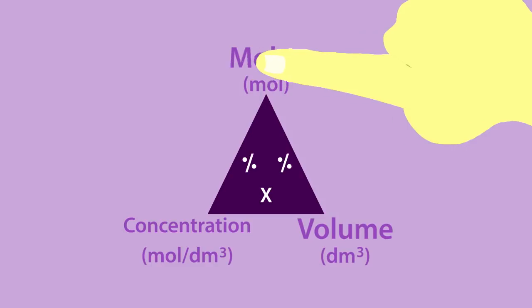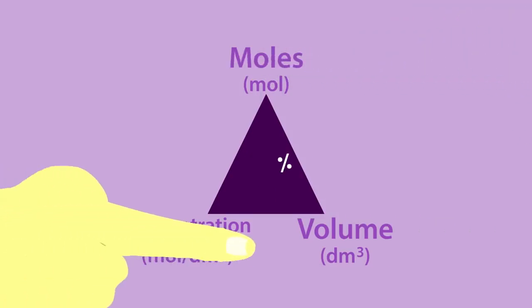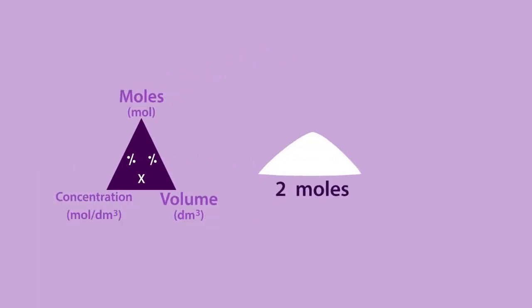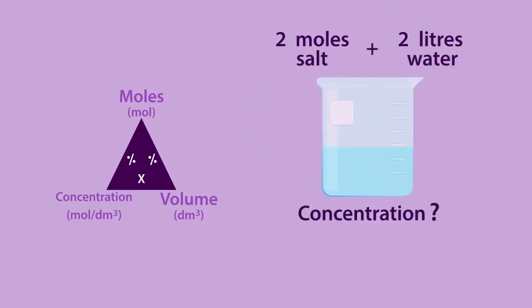If you want to find the concentration, you cover this and divide the number of moles by the volume. Let's try this now. If you have 2 moles of salt and dissolve it in 2 liters of water, use the formula triangle to calculate the concentration of the salt solution. Don't forget the units. Pause, write down your working out, and continue when ready.